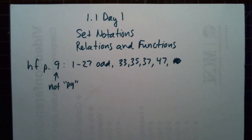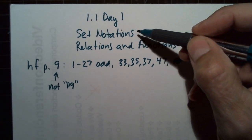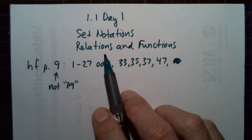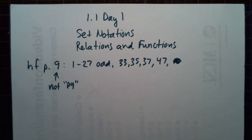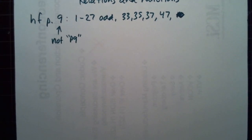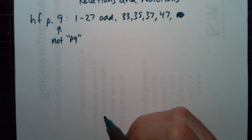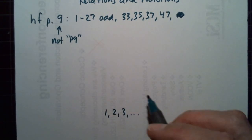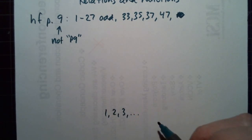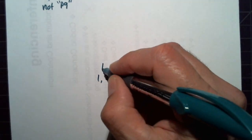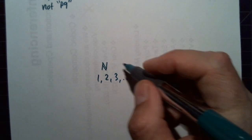Today we will look at different ways of describing sets and also review relations and functions. Let's look at the different sets of numbers. We have 1, 2, 3 up to infinity, and these are called the natural numbers, and the symbol is that.